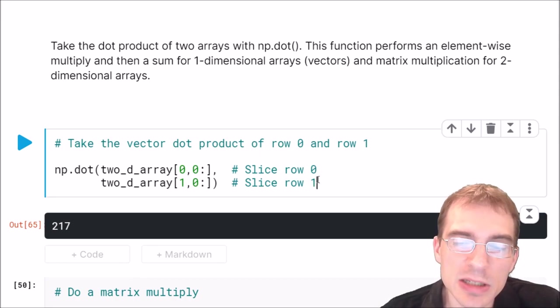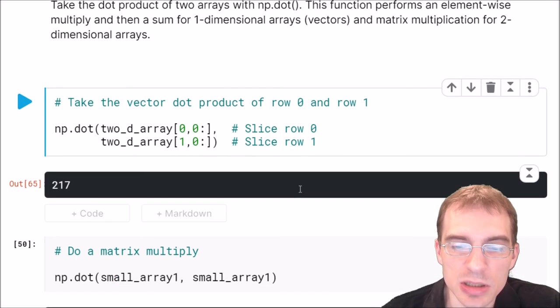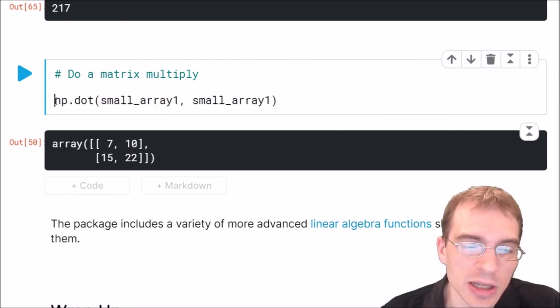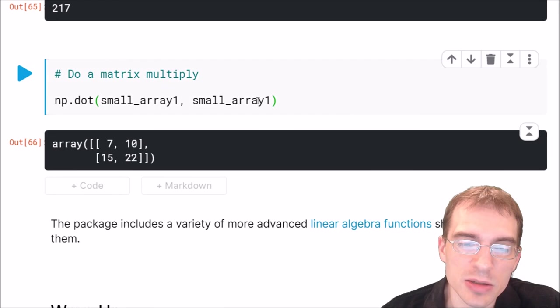Now if you use np.dot on two NumPy arrays that are not one-dimensional, it will instead perform a matrix multiplication instead of a dot product. If we wanted to do a matrix multiply with our small 2x2 array with itself, we could say np.dot and then just pass in the small array twice, and this is the result of multiplying that 2D matrix by itself.